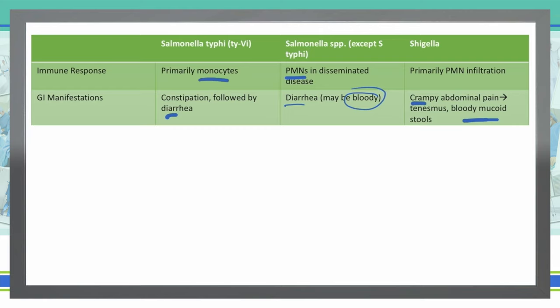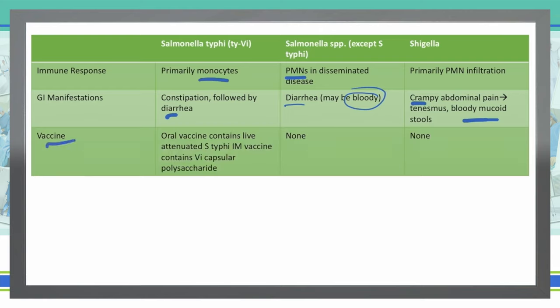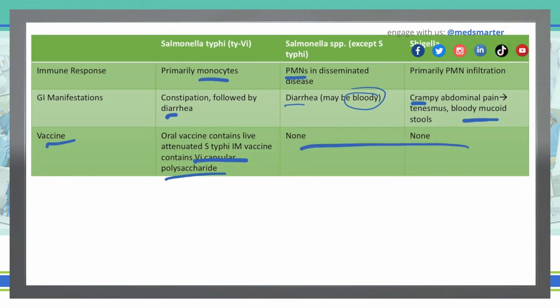Can these have a vaccine to decrease the risk of infection? The answer is yes, if they have that Vi capsule. We can do an oral vaccine with the live attenuated version of Salmonella typhi against that Vi capsular polysaccharide. Without that Vi capsular polysaccharide, there's no ability to create a vaccine against the other Salmonella species or Shigella — therefore they have no vaccines for those cases.